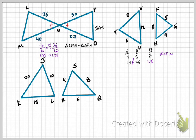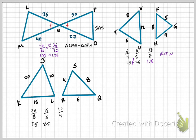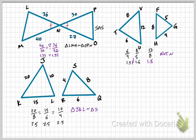Another example with all sides. Starting with the longest first: 20 on the left corresponds to 8, 15 on the left corresponds to 6, 10 on the left corresponds to 4. So 20 divided by 8 is 2.5, 15 divided by 6 is 2.5, and 10 divided by 4 is 2.5 — so these are all similar. For the similarity statement, let's go with J, K, L. J is where the small and the longest side are meeting, and on the right triangle the smallest and longest meet at point S. K is where the longest and medium side are meeting, so that would be Q, and then we finish with R. So JKL is similar to SQR.